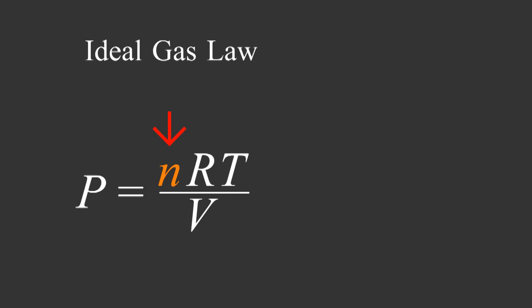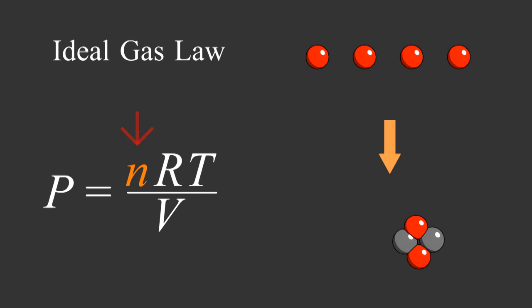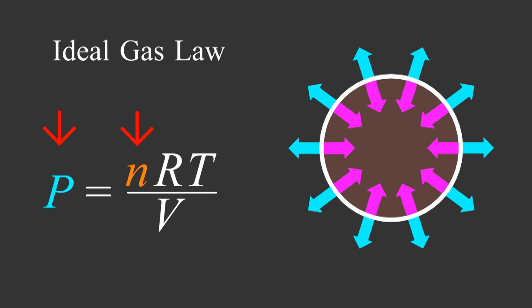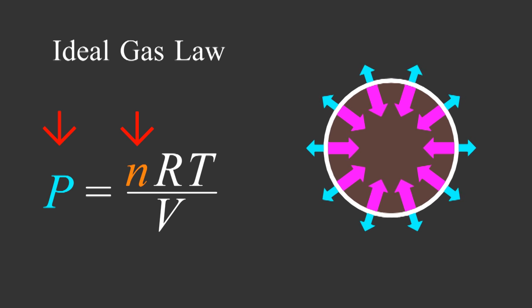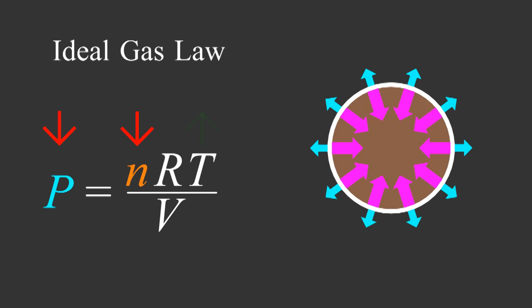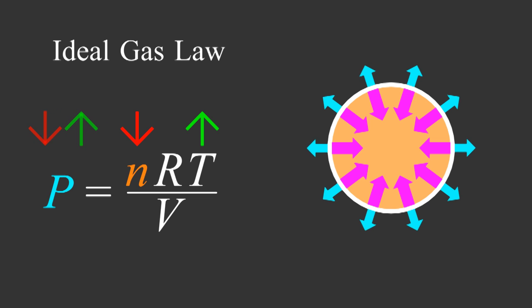Last time, we talked about the ideal gas law. Pressure is proportional to temperature divided by volume times the number of particles. This number is going down. When we do fusion, we're combining four particles into one. As the number of particles goes down, the pressure goes down too. Now there's not enough pressure to hold off gravity, so the core contracts, which raises the temperature and raises the pressure until it's strong enough to hold off gravity again.